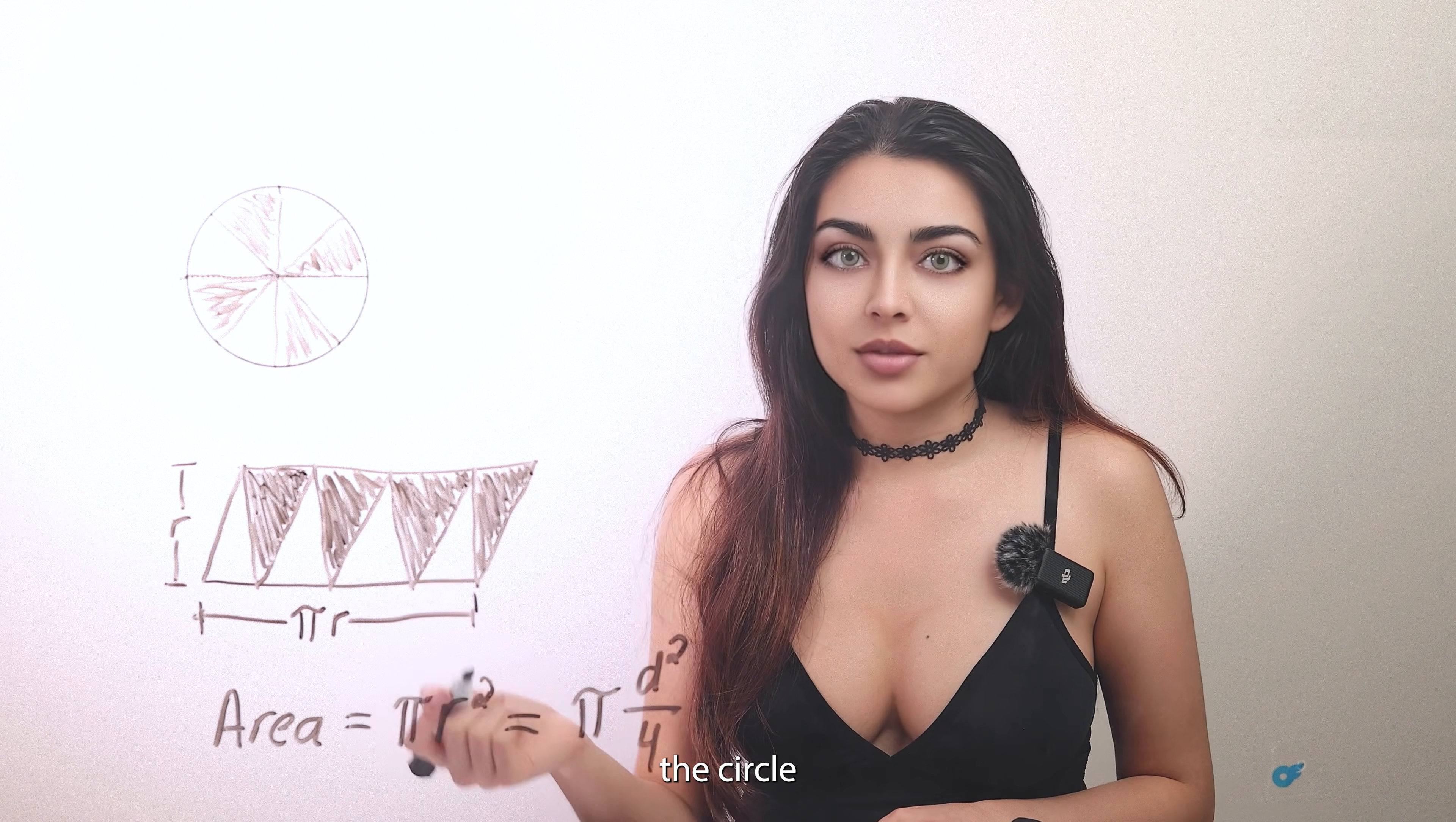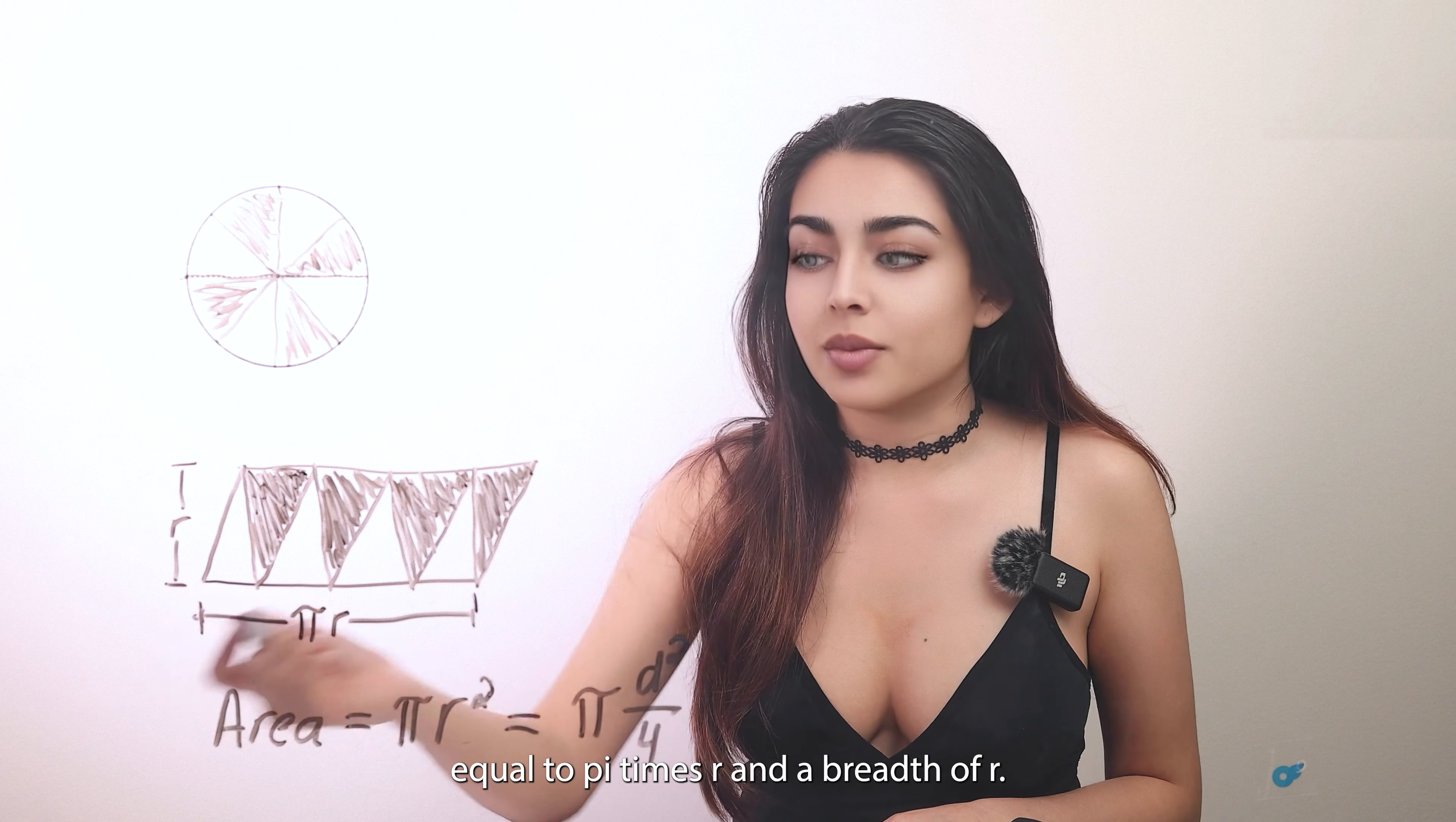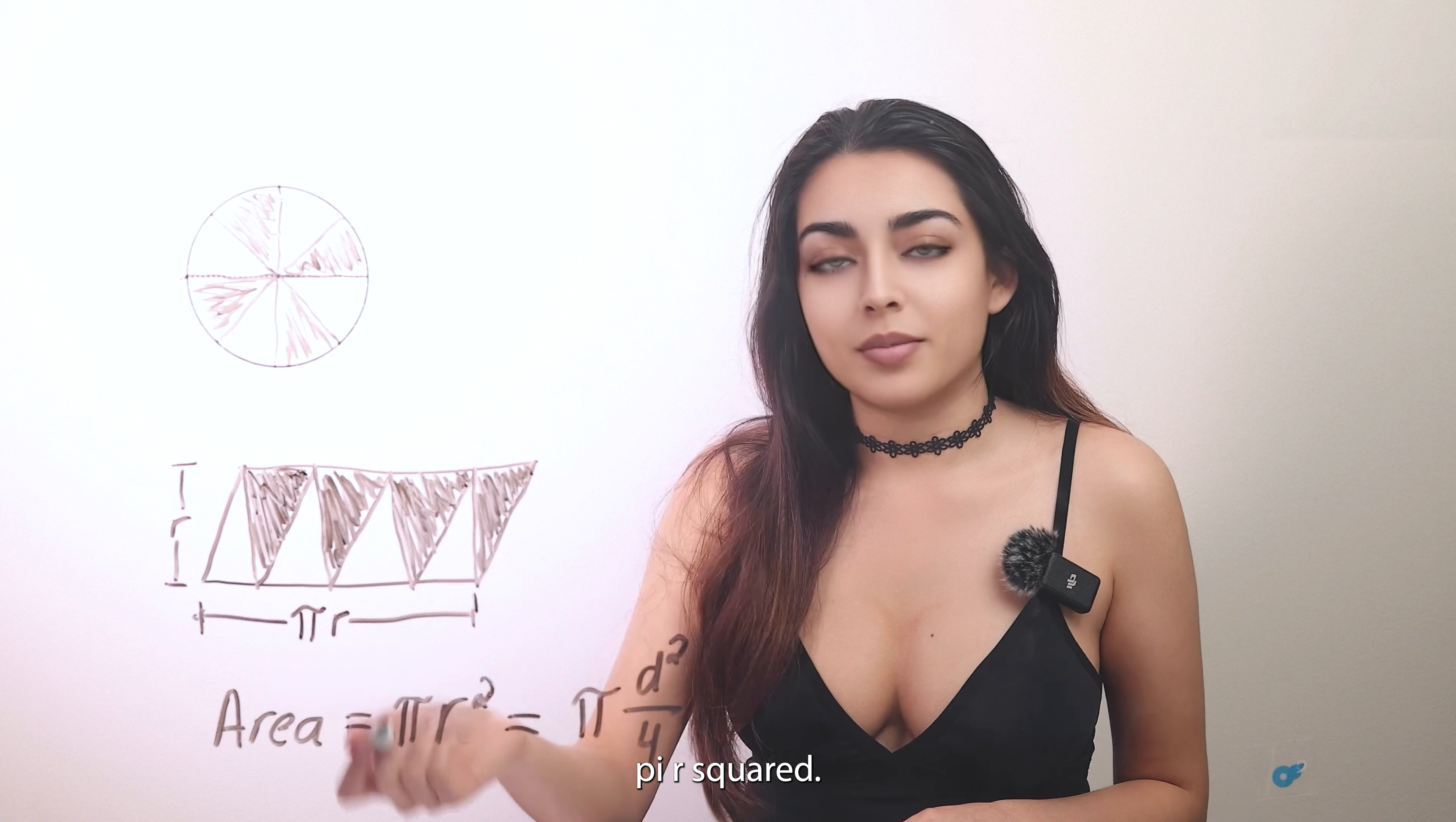If the number of sectors cut from the circle is increased, the parallelogram will eventually look like a rectangle with length equal to pi times r and a breadth of r. And then calculating the area gives us pi r times r or pi r squared.